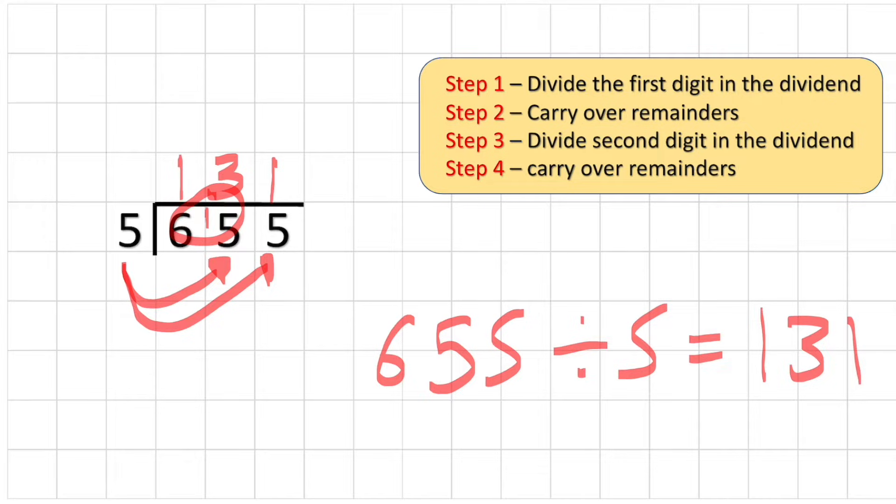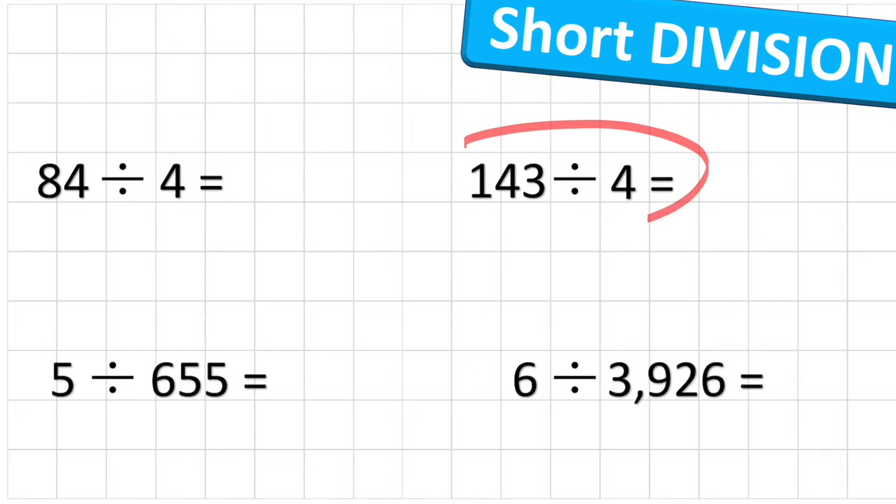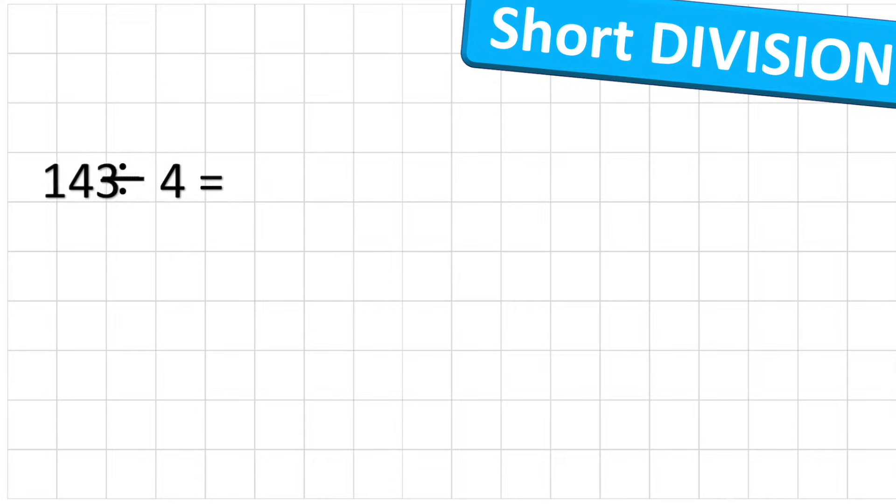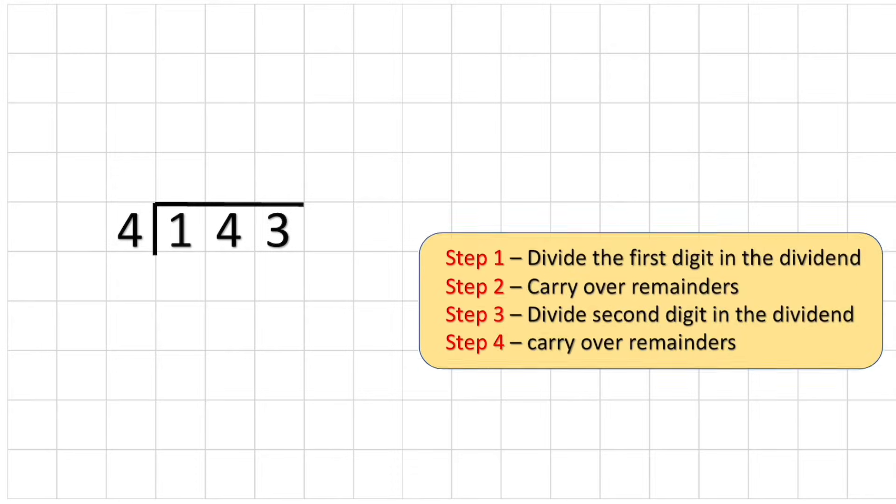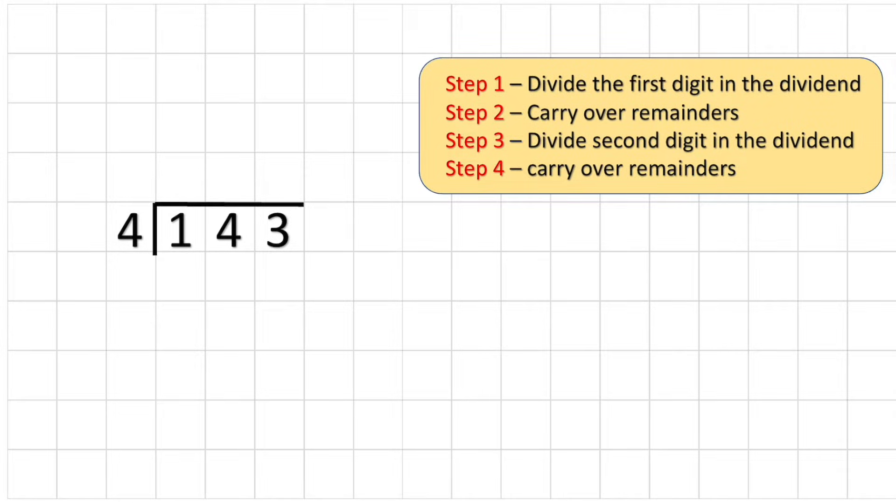Okay, let's have a look at our third question. Let's have a look at 143 divided by four. So this time I'm going to do exactly the same thing. Set it up into my bus stop, 143 my dividend inside, and my divisor four outside. Same steps as before.